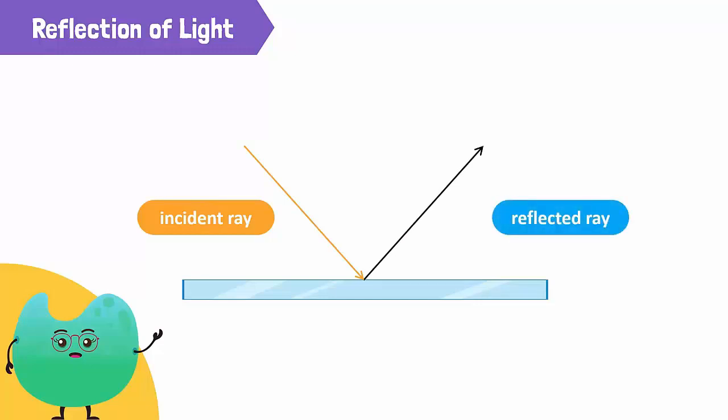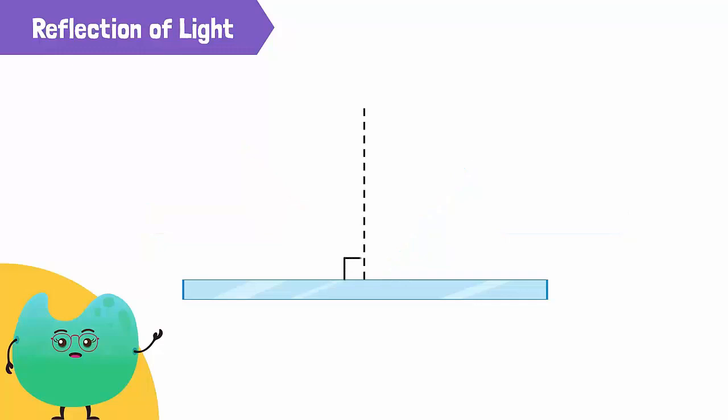Here, the ray that reflects off the surface of the mirror is a reflected ray. Let's draw a dotted line at an angle of 90 degrees from the surface of the mirror. This line is called the normal line or just the normal. It is an imaginary line.